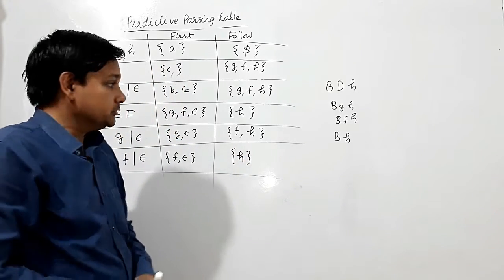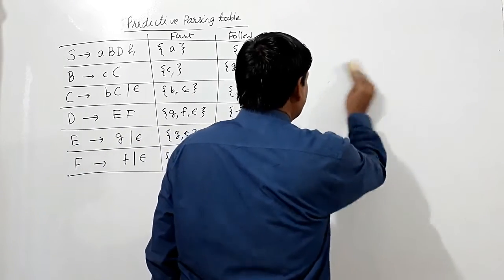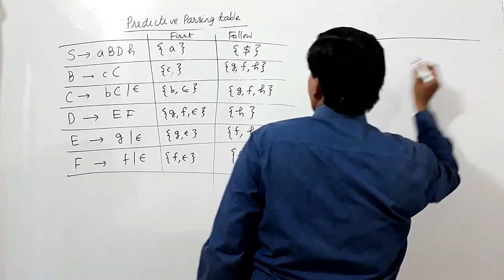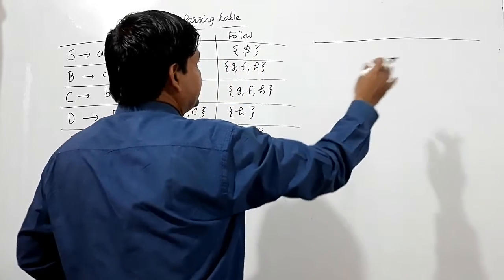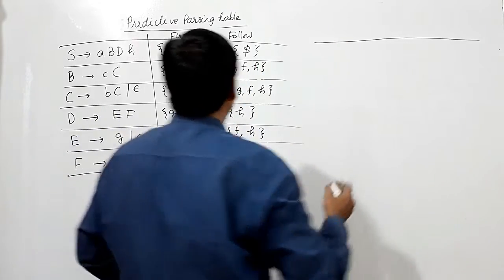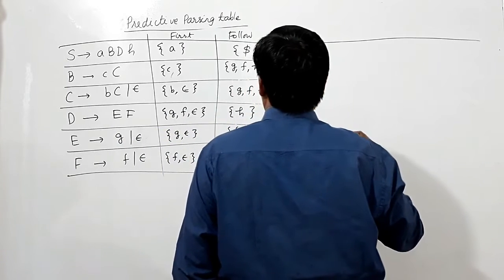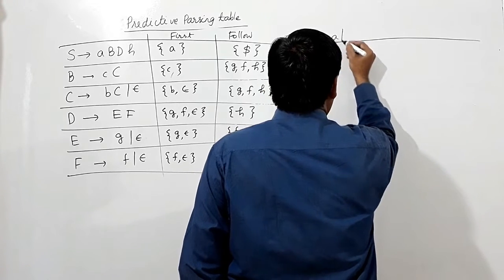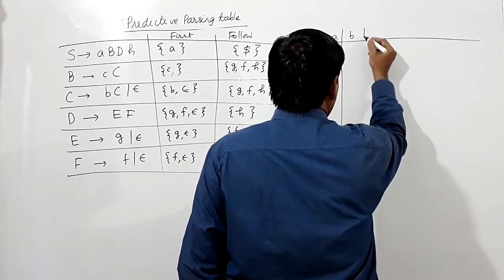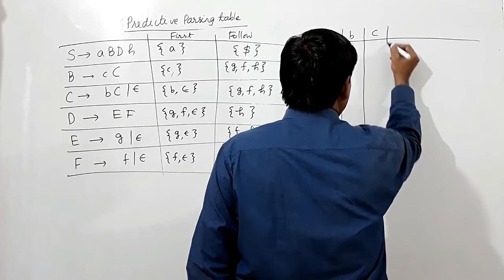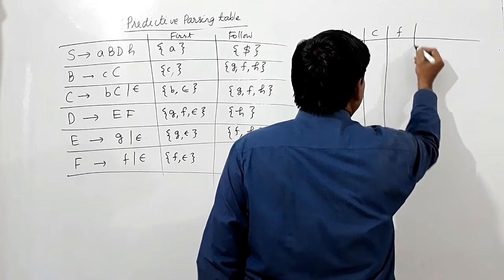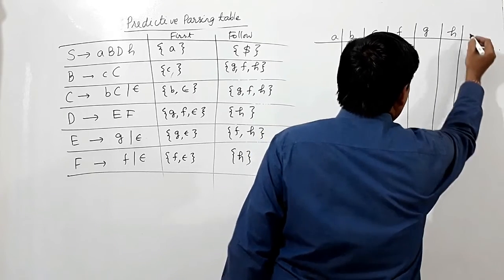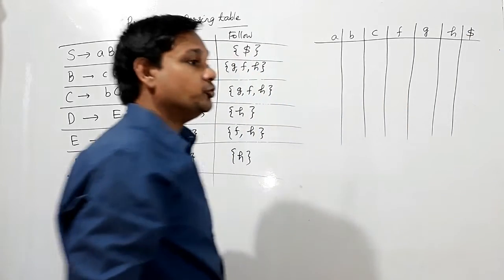Now that we know how to find FIRST and FOLLOW sets, we can easily construct the parsing table. The terminal symbols used as columns are A, B, C, F, G, H, and $. We don't use Epsilon as a column. The non-terminals as rows are S, B, C, D, E, and F.